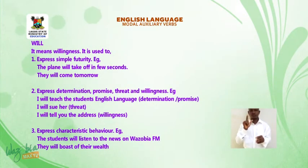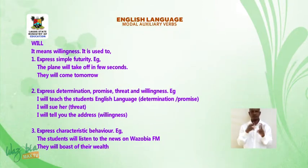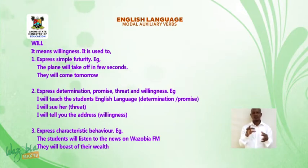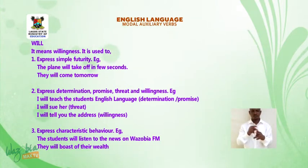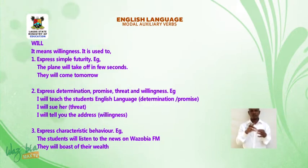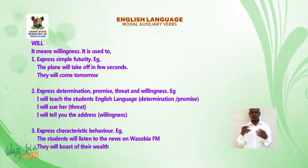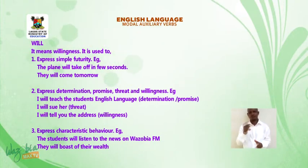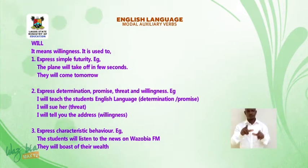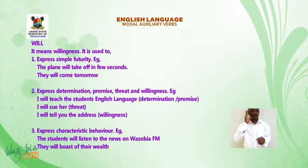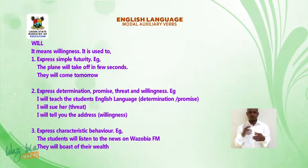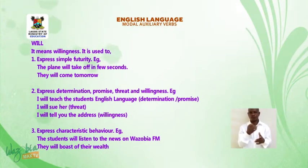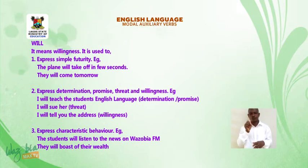WILL (W-I-L-L). It means willingness. It is used to: one, express simple futurity — for example, the plane will take off in a few seconds; they will come tomorrow. Two, to express determination, promise, threat, and willingness — for example, I will teach the students English language (determination or promise); I will sue her (threat); I will tell you the address (willingness). Three, to express characteristic behavior — for example, the student will listen to the news on Wazobia FM; they will boast of their wealth.